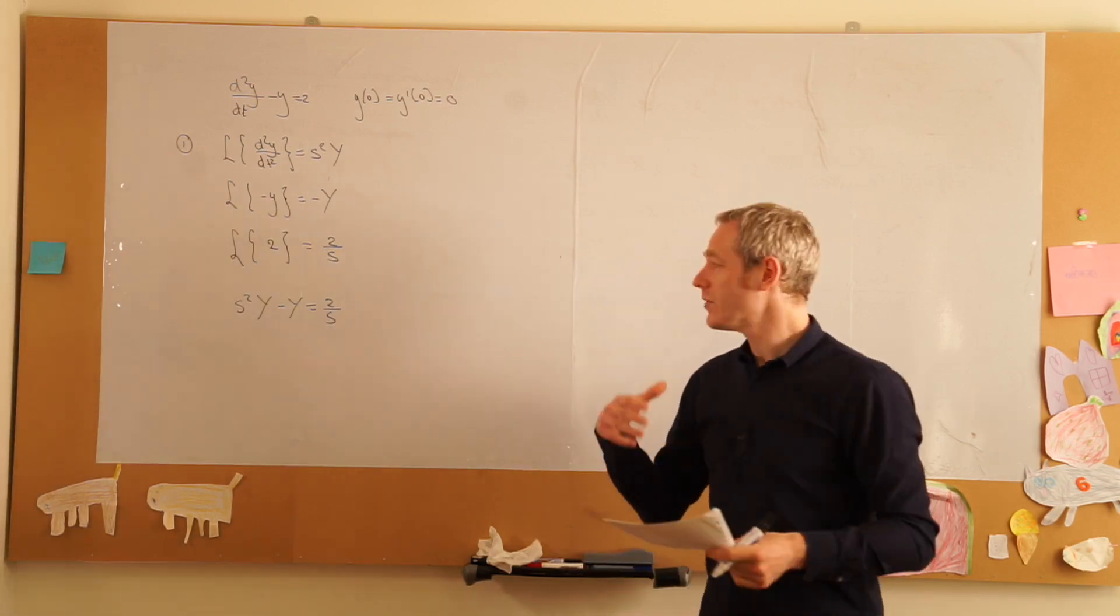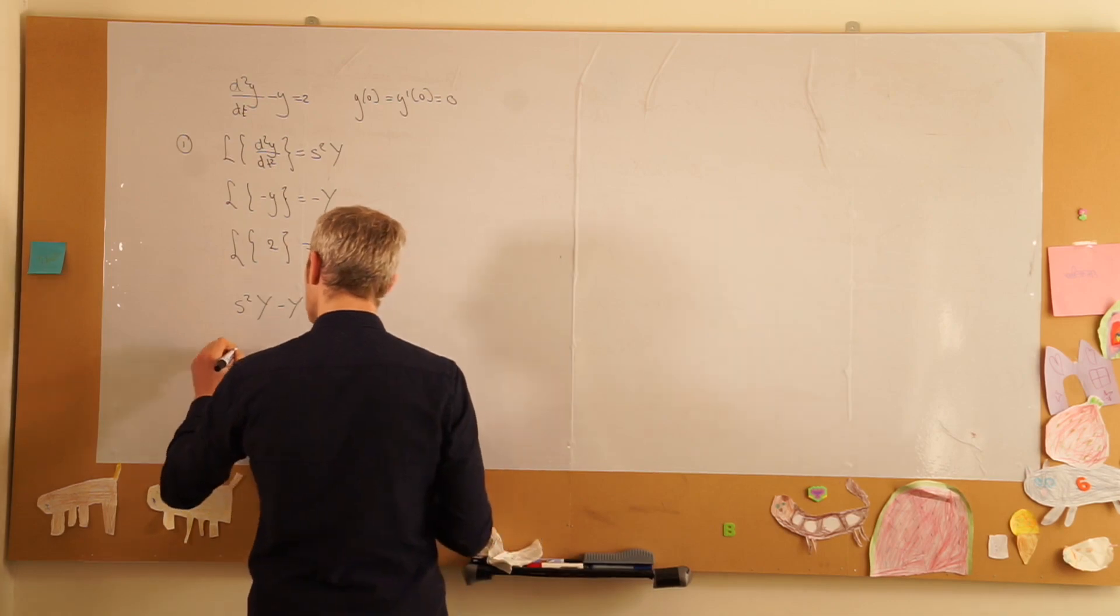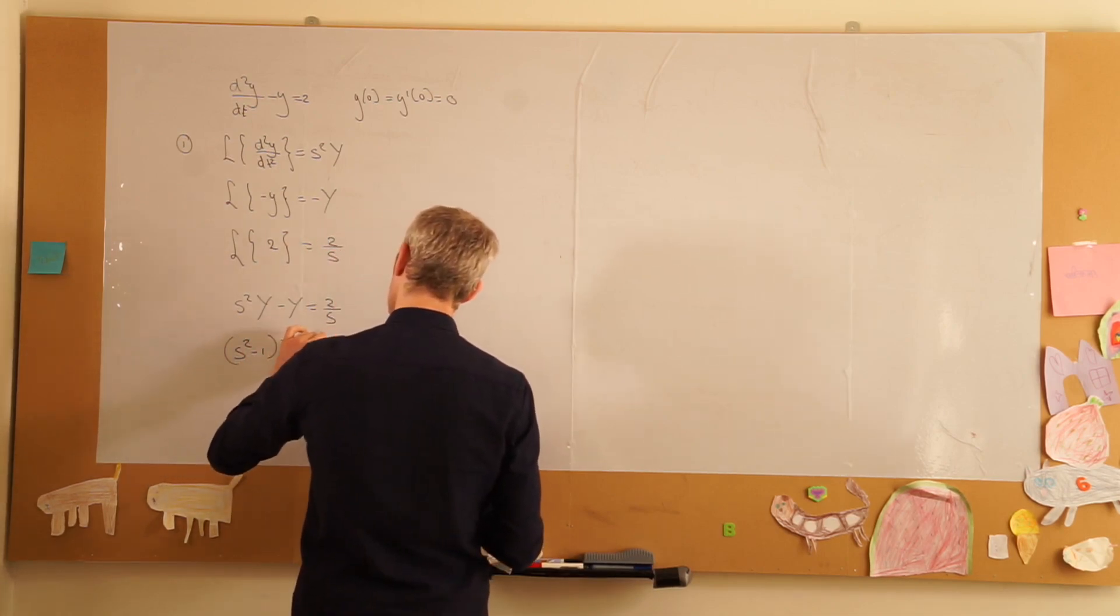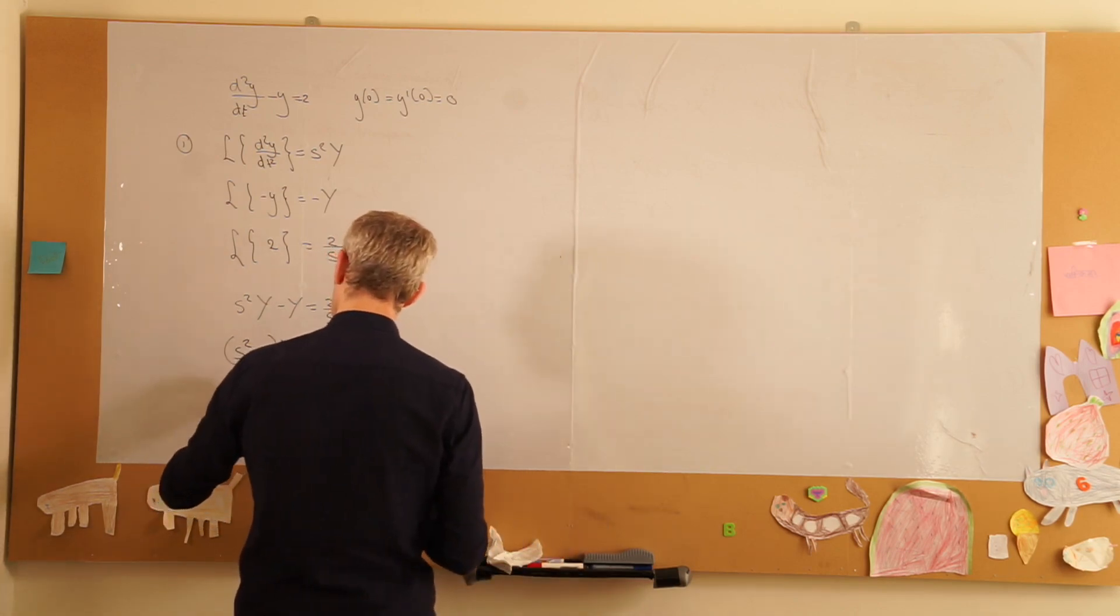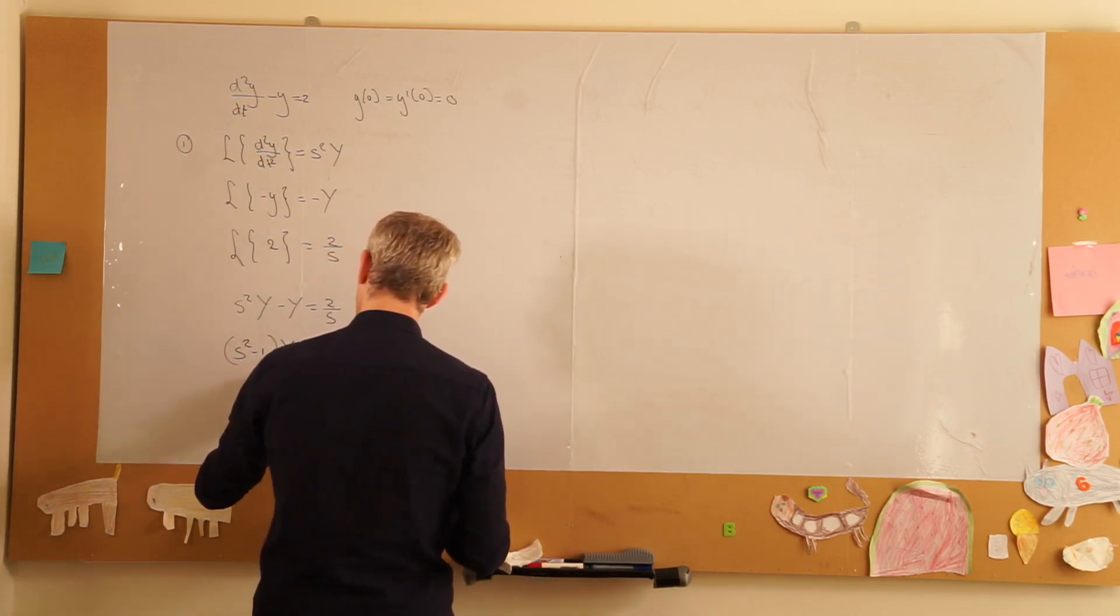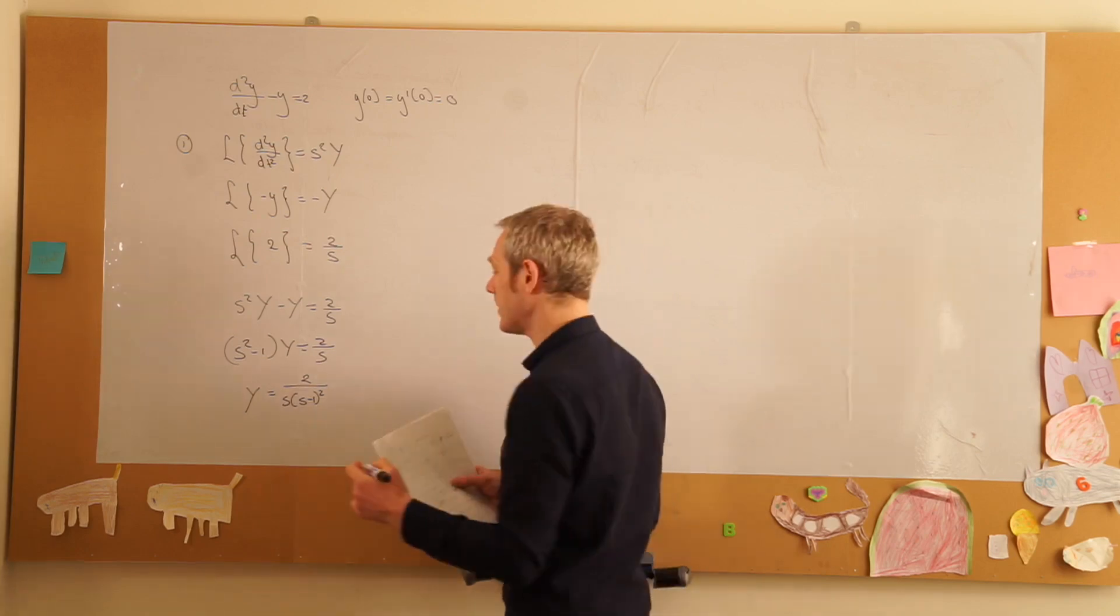Now we need to rewrite this so that we isolate Y. Well, we rewrite this as s squared minus 1 times Y is equal to 2 over s, which means that Y is equal to 2 over s times (s squared minus 1). So this is step 2.